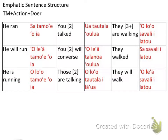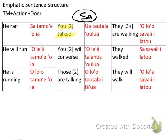Next: 'you two talked.' This uses a dual pronoun. I didn't really clarify this, so you could have put 'sa' here instead of 'ua.' 'Ua tautala oulua' is more specifically 'you two just talked,' but if you put 'sa' or 'na' with 'tautala oulua,' I would have been really happy and you would have been correct.